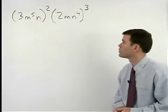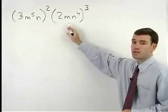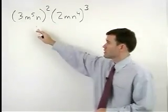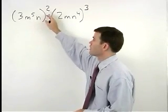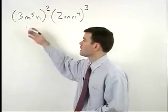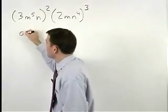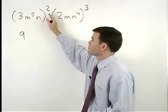We start this problem by applying the power rule for each set of parentheses. To simplify 3m to the fifth n squared, we first square the coefficient of 3 to get 9, then multiply each of our exponents by 2.